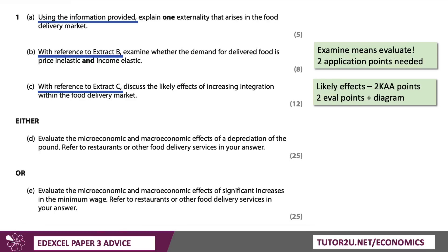For the 12-mark question, it says 'likely effects of increased integration within the food delivery market' — mergers and takeovers, for example. You need two separate K-A points with at least three links in the chain of reasoning, and two relatively short evaluation points. You'll definitely need one diagram in your answer — perhaps a economies of scale or monopoly diagram.